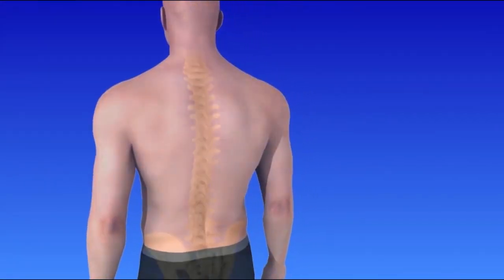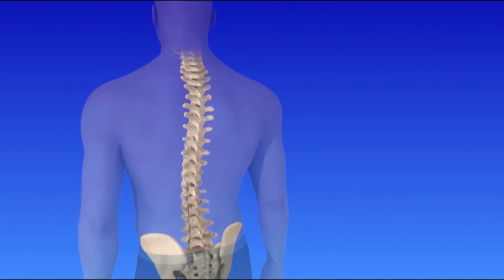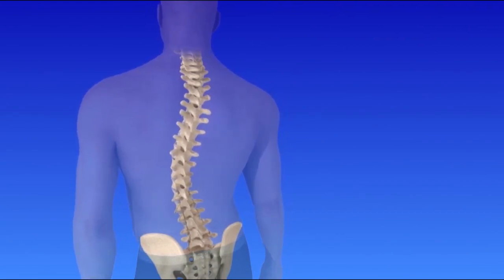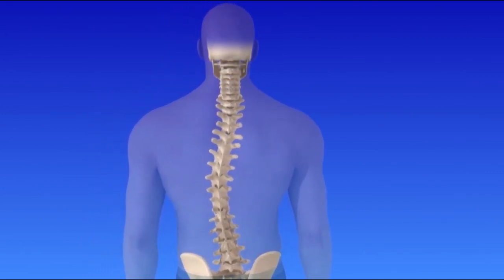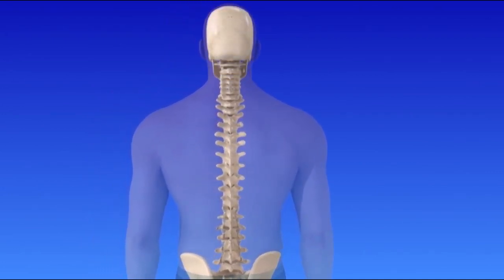Scoliosis is an abnormal curvature of the spine that if left untreated can lead to medical complications. In order to understand scoliosis better, let's first take a look at a healthy spine.